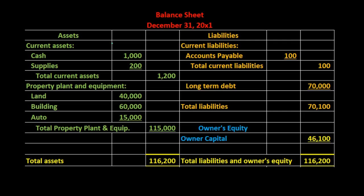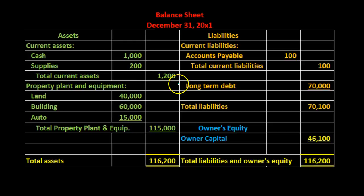Let's take a look at an example. Here is a balance sheet — we've got assets, liabilities, and equity. Total assets consist of current assets and property, plant, and equipment. We're looking at the current assets: those assets that are going to be converted to cash or consumed within a year's time period. Liabilities have a current portion and a long-term portion. We're looking at those current liabilities — the ones that are going to be due within a year.